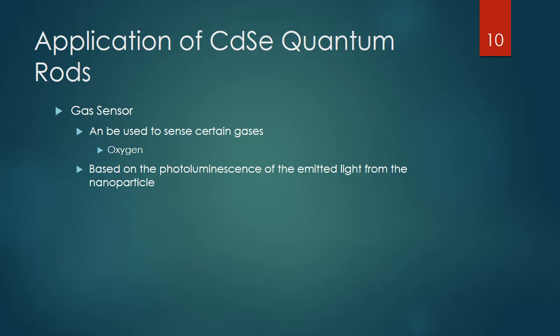One of the less explored applications of cadmium selenide quantum rods is in gas sensors — sensors that detect whether a target gas is present in the environment. One target gas that people have used is oxygen. Based on the reaction with the environment, you can detect if the target gas is present by observing how the photoluminescence changes.